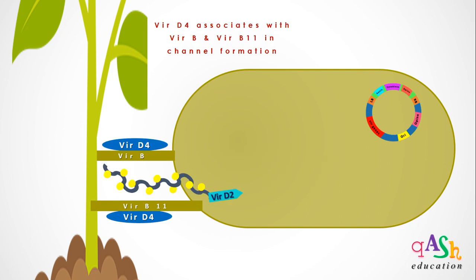While the single-stranded T-DNA copy is being transferred through the channel formed by VirB and VirB11, another vir protein, VirD4, associates with VirB and VirB11. The association of VirD4 with these channel proteins provides stability to the channel.